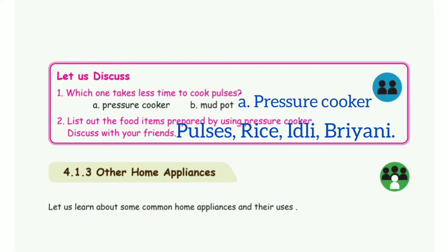Take page number 128. 1st question: which one takes less time to cook pulses? The answer is option A, pressure cooker.